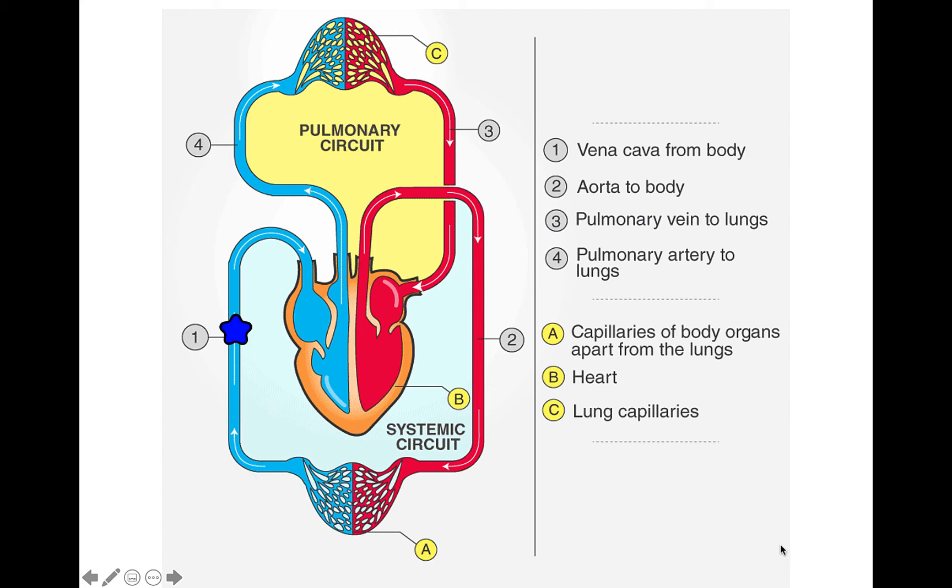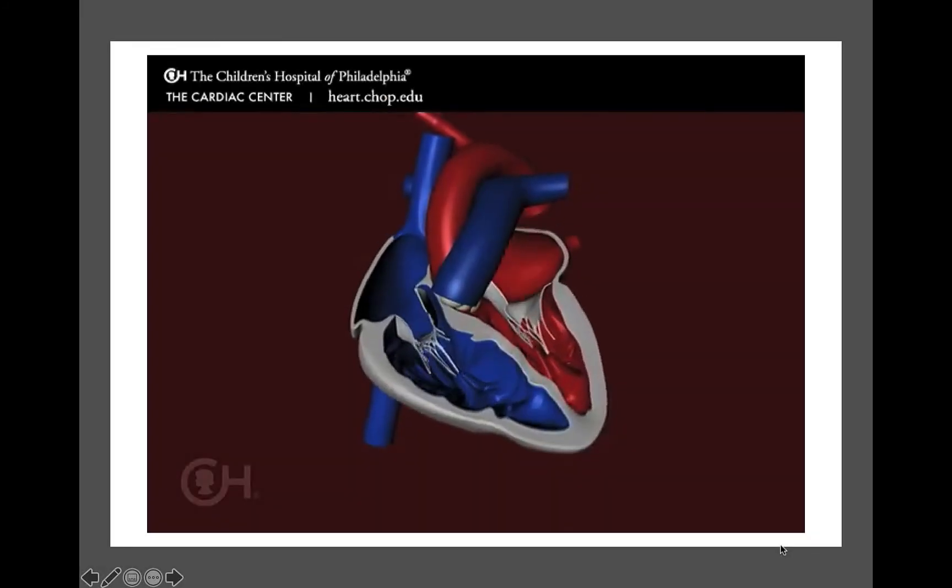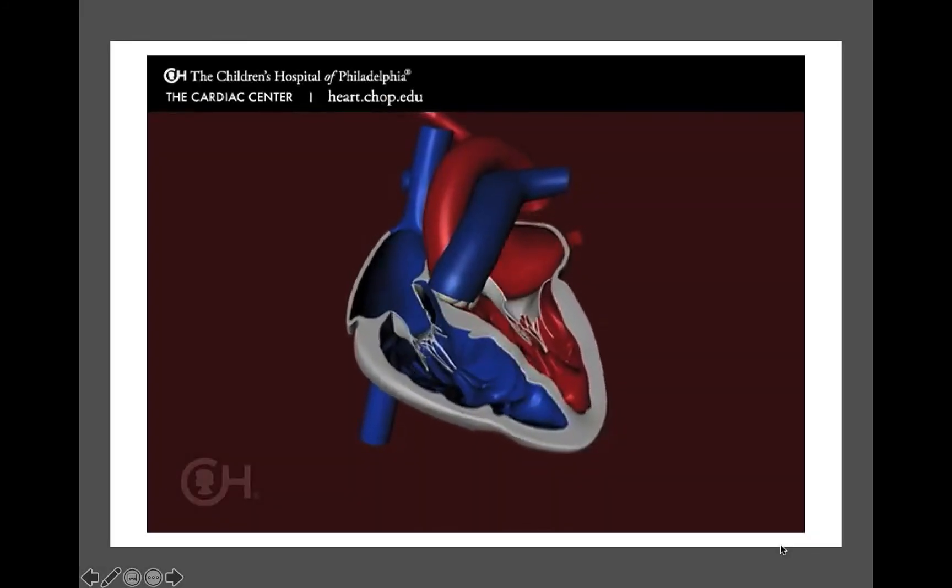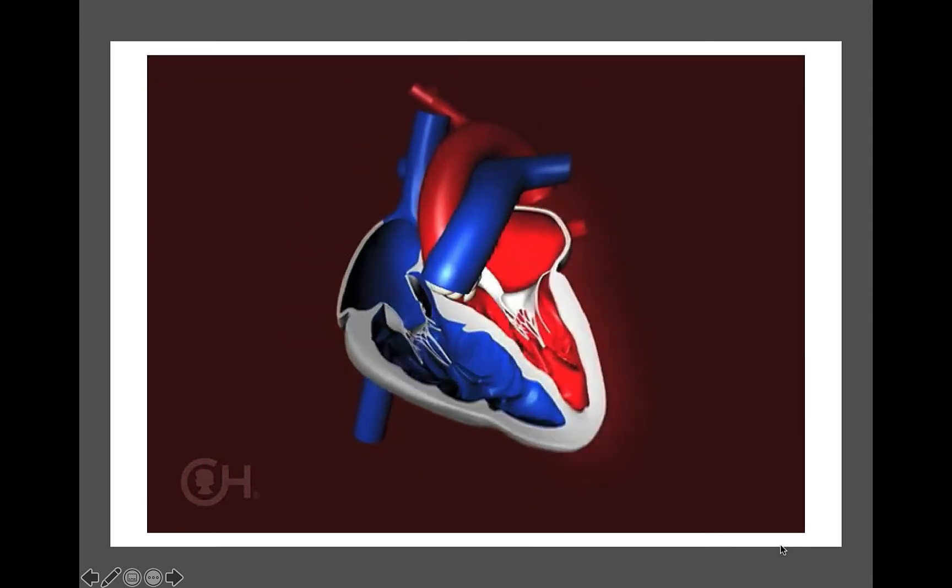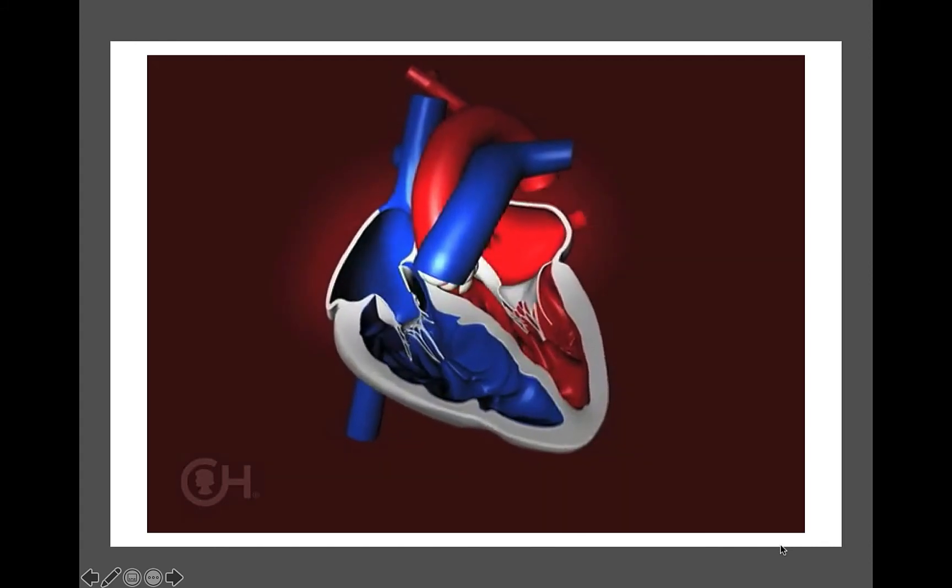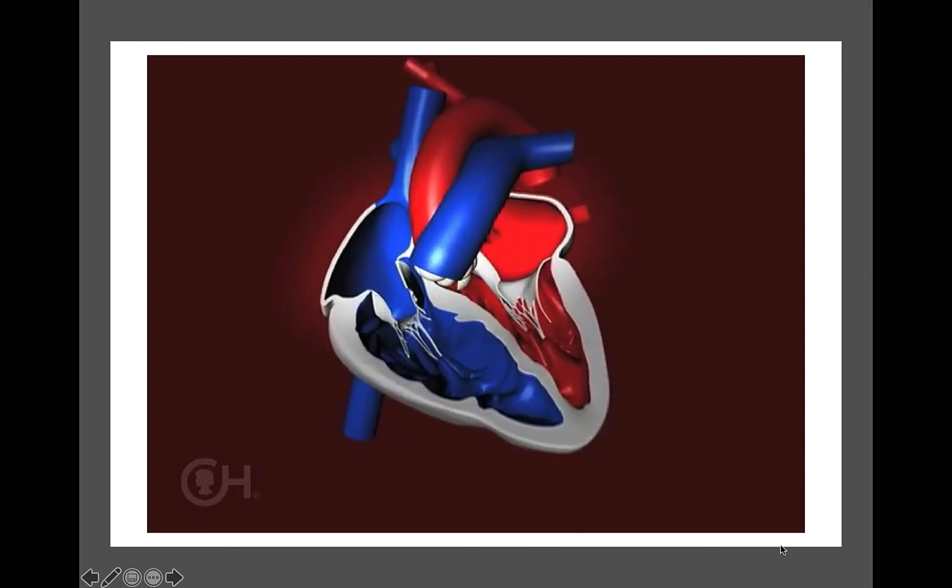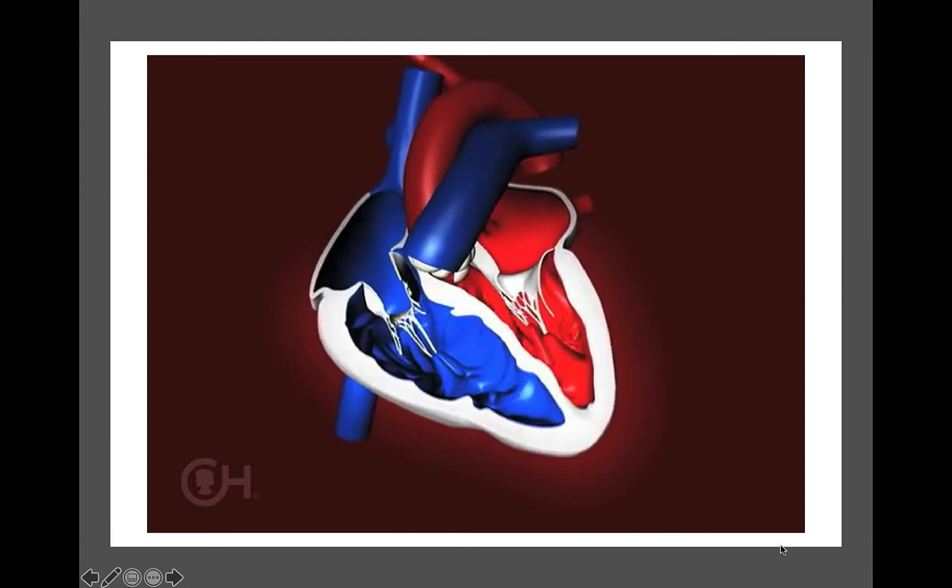This double cycle occurs roughly once per second. This double pump system sees both atria squeezing simultaneously, and as the atria relax, the ventricles squeeze simultaneously, pushing blood to the lungs and to the body. There is a momentary time where all four chambers relax, and then the cycle begins again.